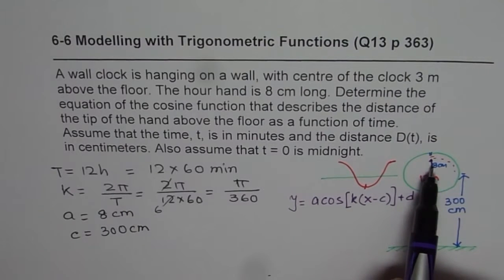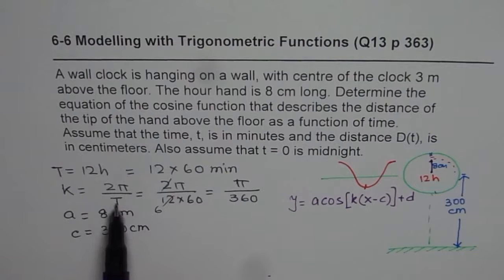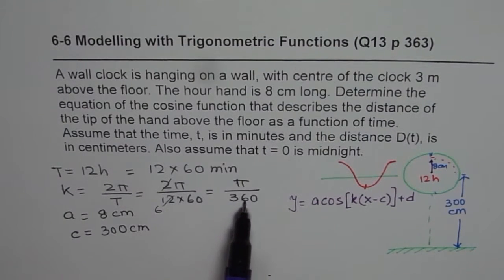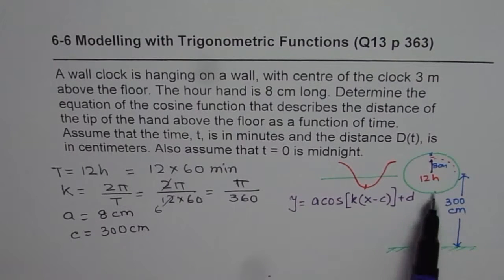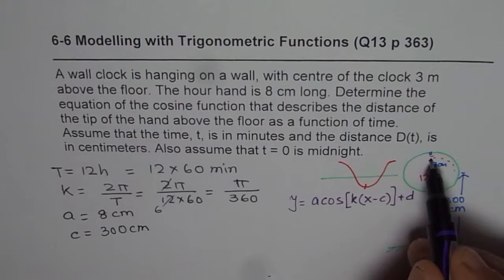So a is 8 centimeters. K we just found, which is 2π by T. Time period is 12 hours. Converted to minutes gives us π over 360 as the value of k. D is the axis. This axis is 300 centimeters above the ground, that is c. And since the starting position is 12,